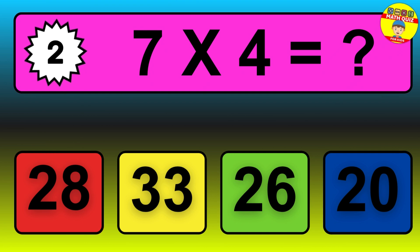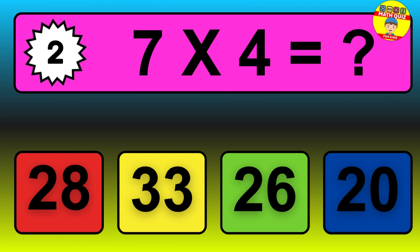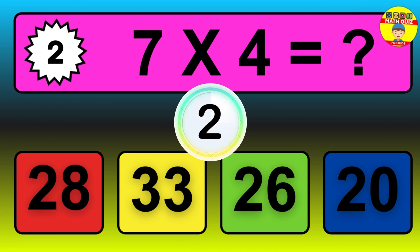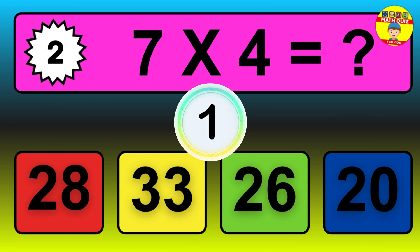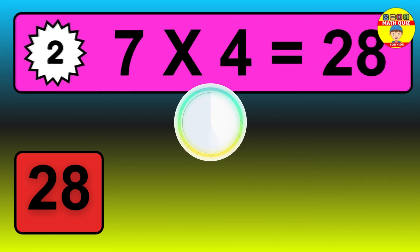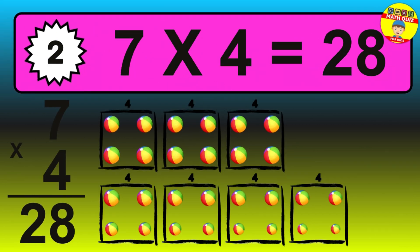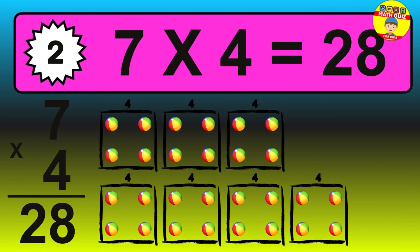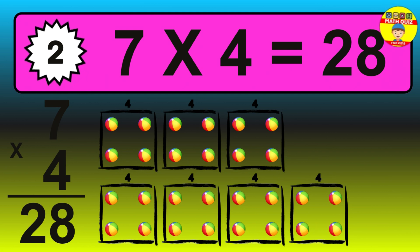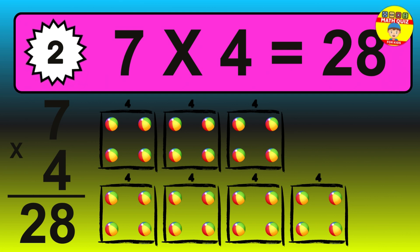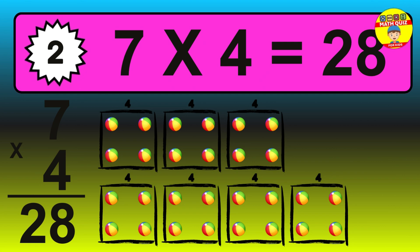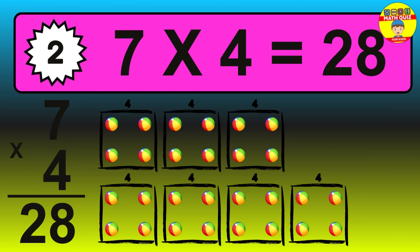Question 2. 7 times 4 equals what? The answer is 7 times 4 is 28. To calculate, we have 7 groups with 4 balls each one. So, how many balls do we have? 28 balls.